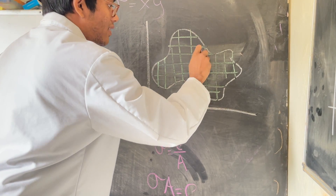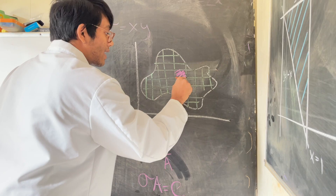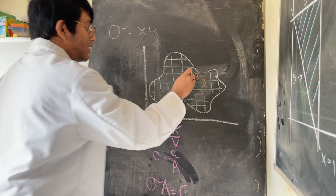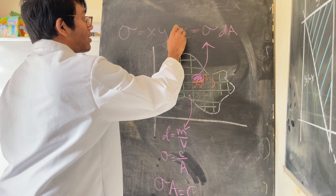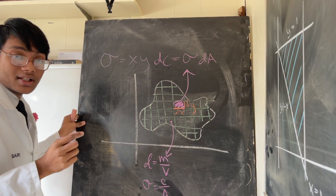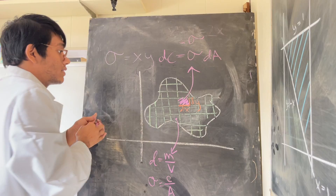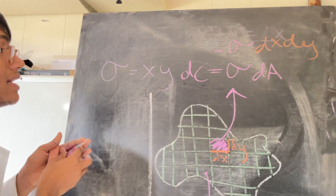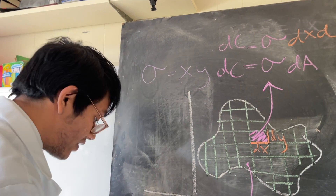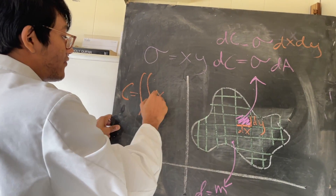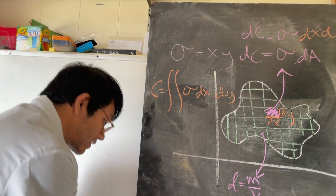To find the total charge, I multiply the density by the area of a little piece. If a piece has width dx and height dy, then the small element of charge dC equals the density times the area, which is xy dx dy. Integrating both sides with respect to x and y gives the total charge as the double integral of xy over the region, written as a double integral of xy dx dy.